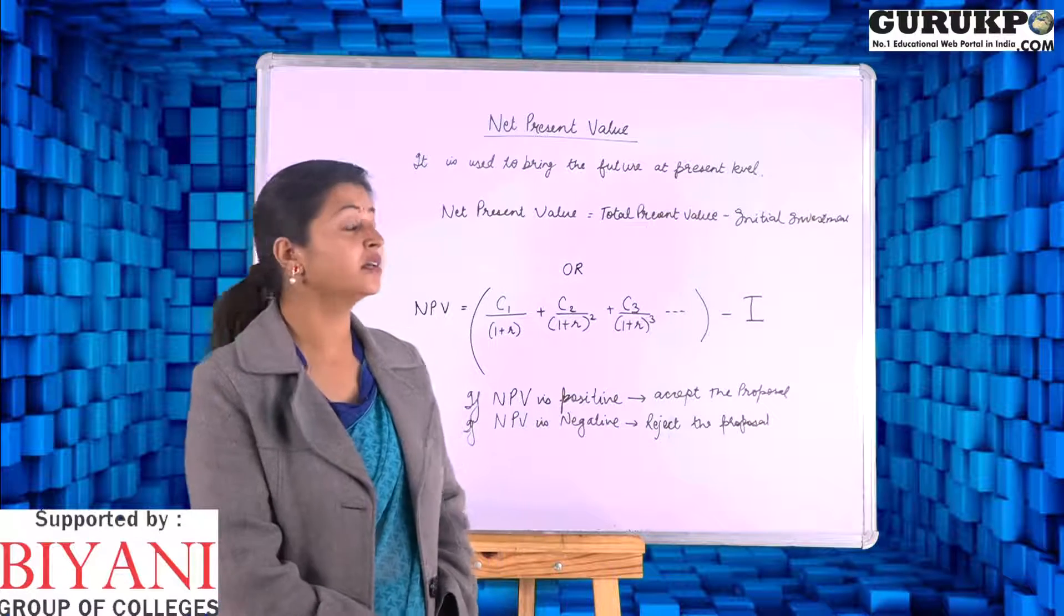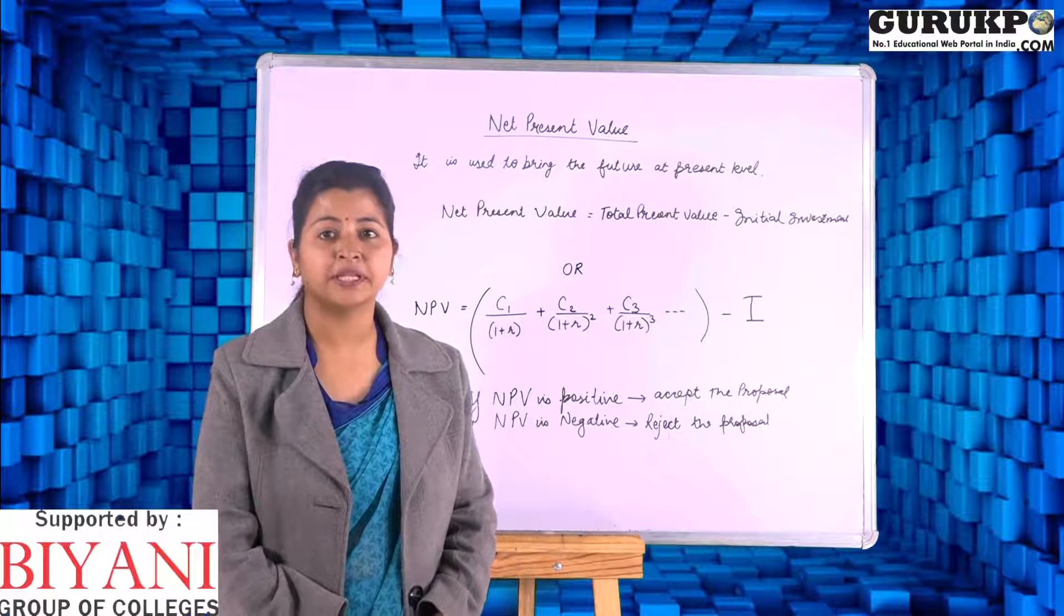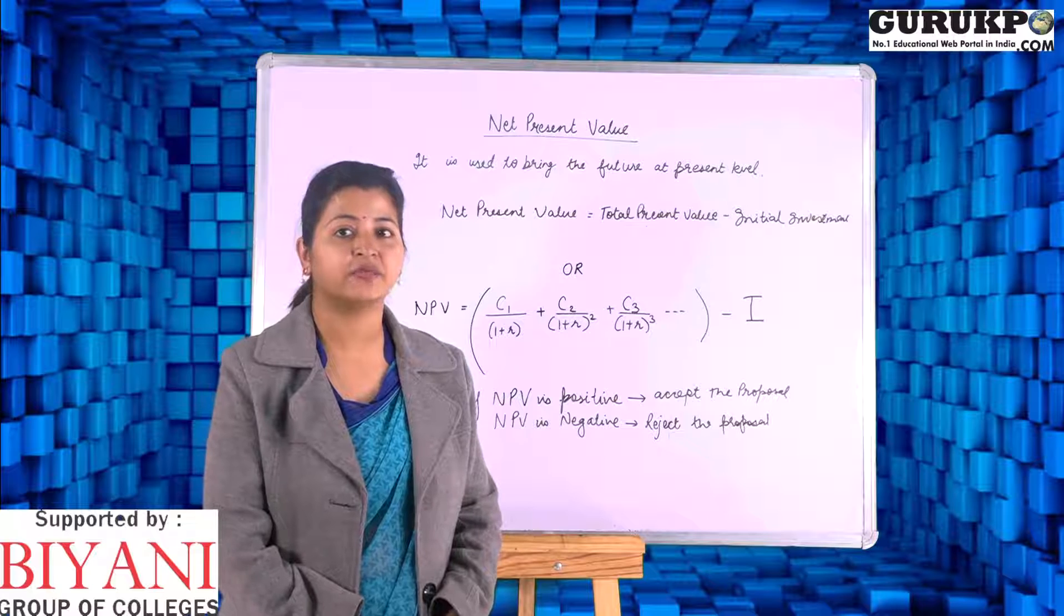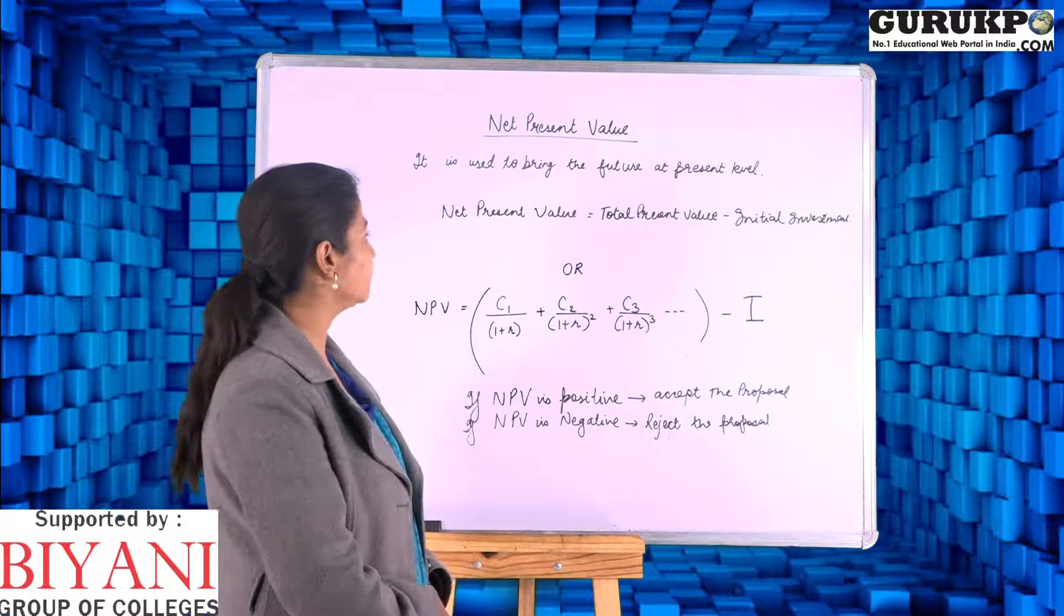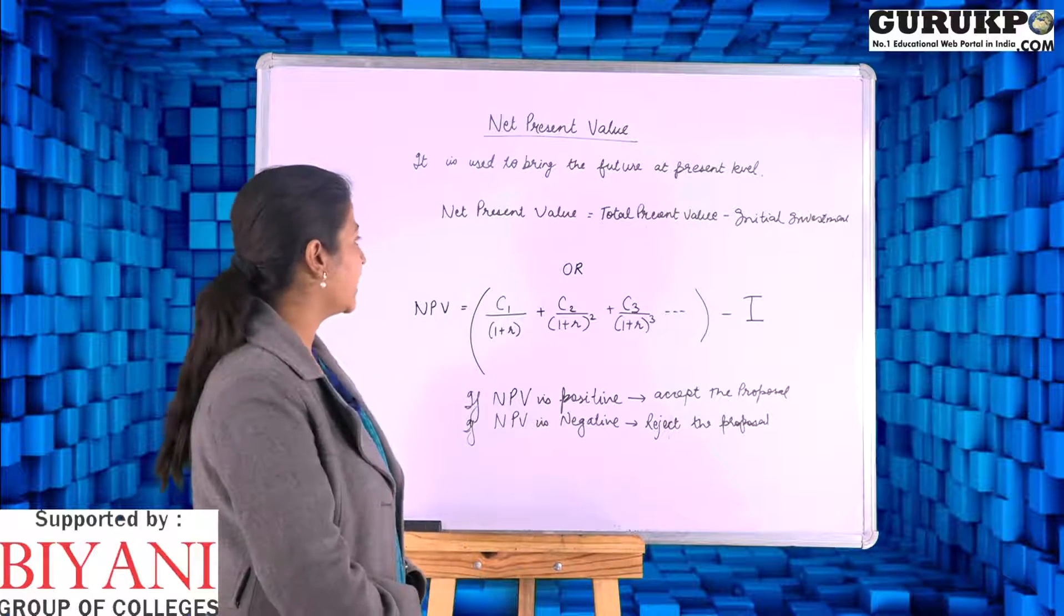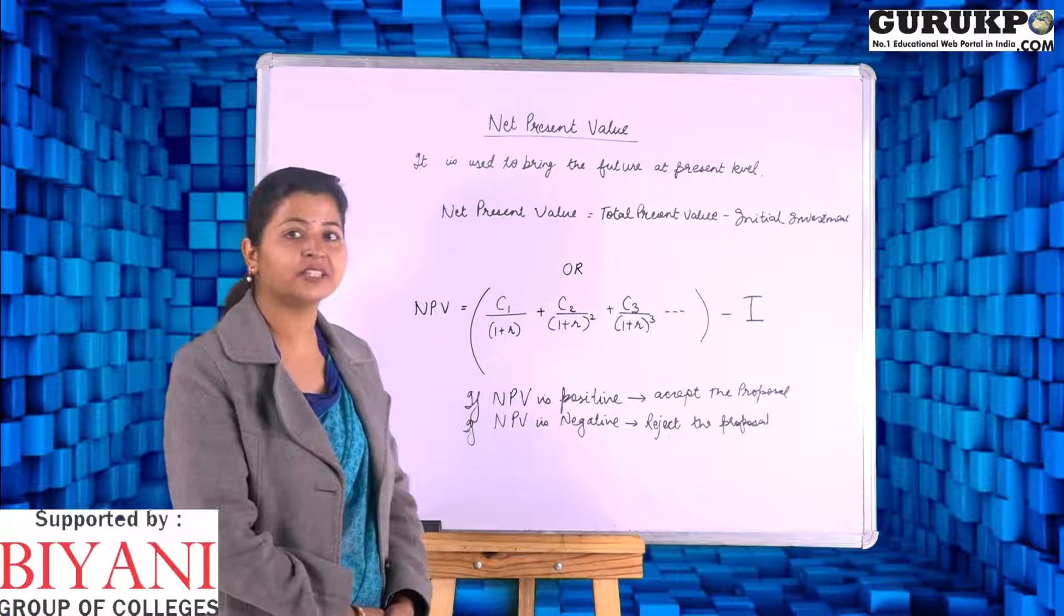It is used to bring the future to present value. In capital budgeting, future values are taken at present value. Its formula is: Total Present Value minus Initial Investment.